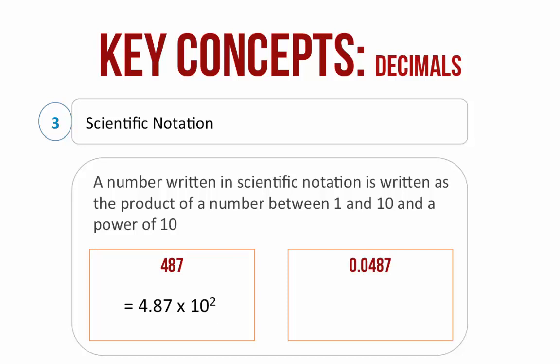0.0487 can also be written as 4.87 into 10 to the power of minus 2. Here, the decimal has shifted from left to right and therefore the power is negative. The decimal has shifted by two places and therefore the power of 10 is minus 2.